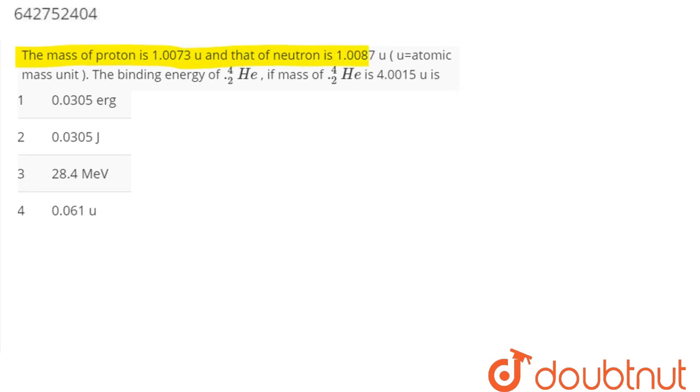And that of neutron is 1.0087 u. u is the atomic mass unit. Binding energy of ₄²He, if mass of